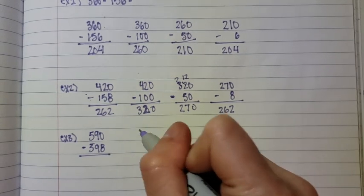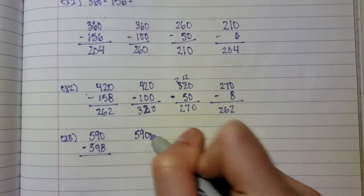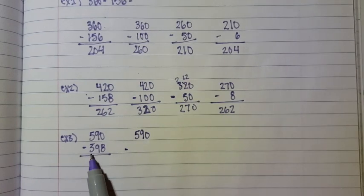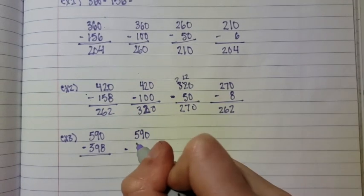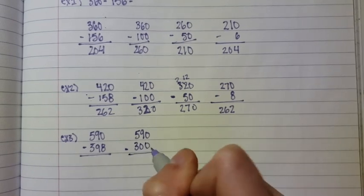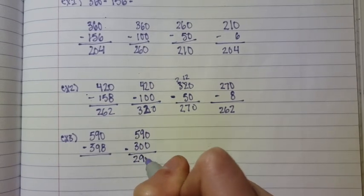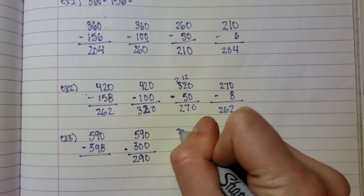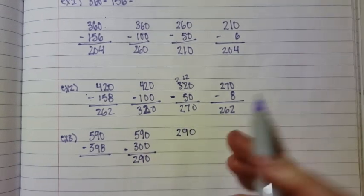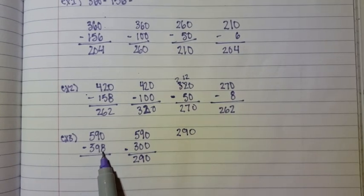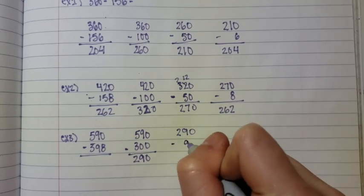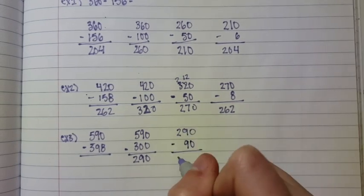The first thing we're going to do, opposite side is right, 590. And then subtract your 100's value, which is 300, making it 290 as the first answer. We're going to take 290 and subtract by the 10's value, which is 90, which gives you 200.